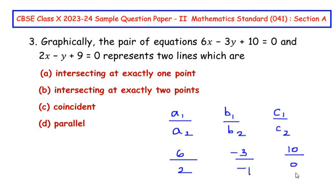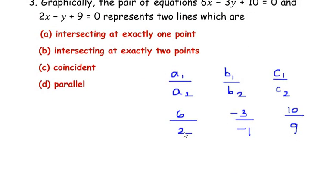So let us simplify this. 6 over 2 is 3, minus 3 over minus 1 is 3, and 10 over 9 cannot be simplified so it remains as 10 over 9.